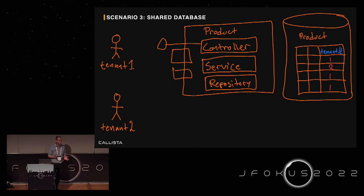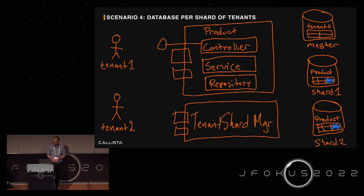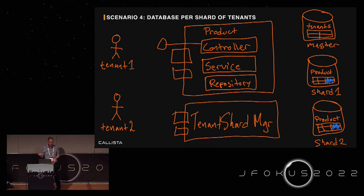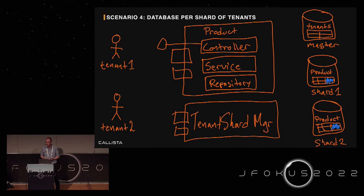One pattern doesn't fit all situations, and these patterns can and should be combined. For instance, the database per tenant pattern could be modified into a database per set of customers — a shard — where we use a shared database inside those shards, combining shared database with database per tenant. The same can be done with schema per tenant, keeping a small number of databases and hosting a larger number of schemas inside each, gaining the best parts of all these patterns.